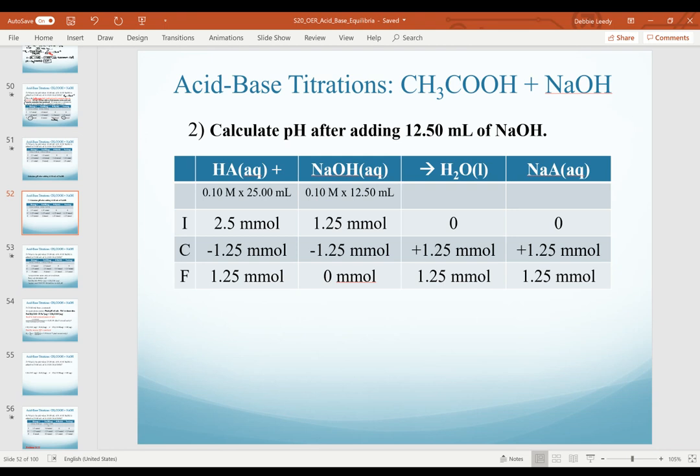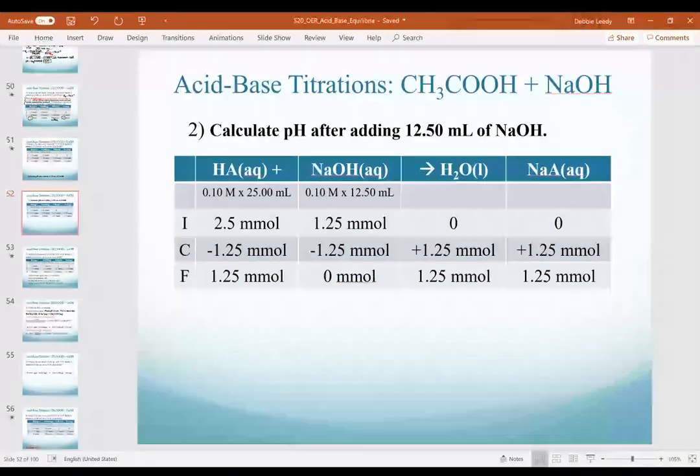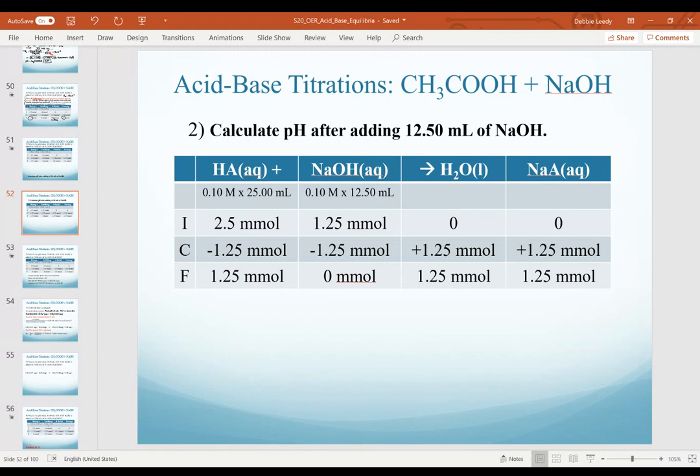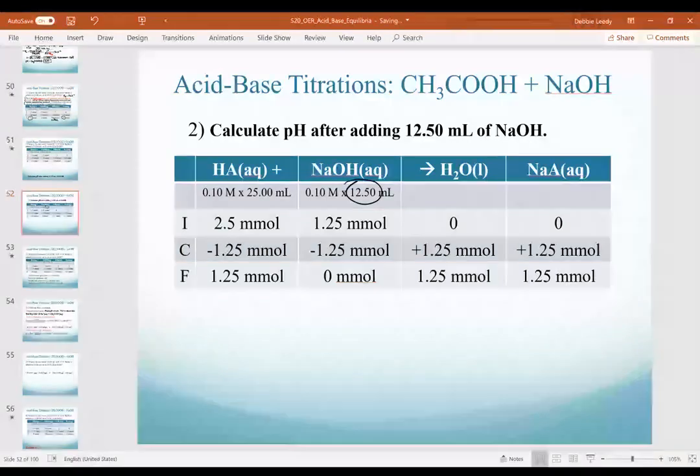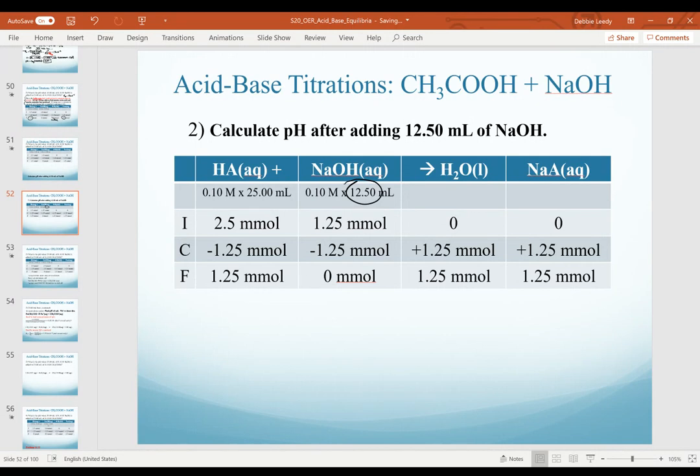We are continuing with the solution for our second point in region two. At the end of our last video, I asked you to calculate the pH when we added 12.50 milliliters of base. Hopefully, what you recognize is that we are still in our buffer zone, and we recognize that because sodium hydroxide is still our limiting reagent, it goes to zero milliliters. Our amount of change, therefore, is the same across the board, 1.25 for everything.